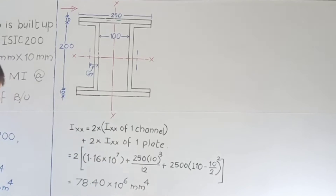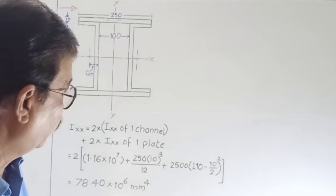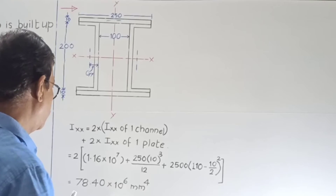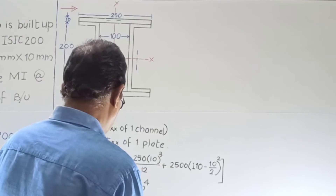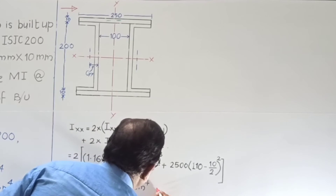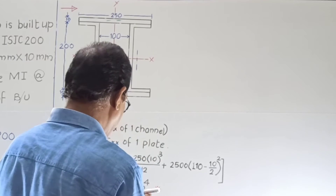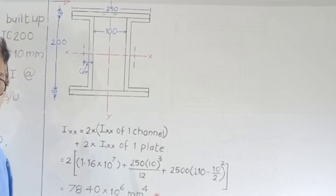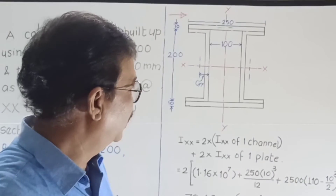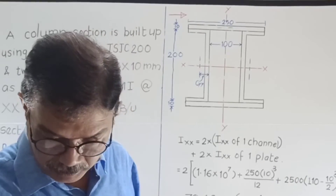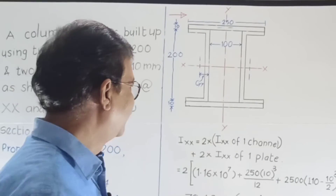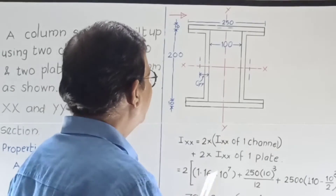So the answer for IXX of the built-up section is IXX of the channel sections plus IXX of the plates, giving 78.40 × 10⁶ mm⁴. Now let us find IYY.